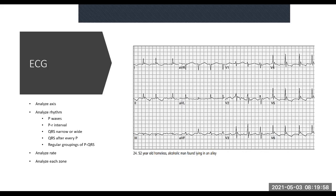Our history today is a 52-year-old homeless alcoholic man found lying in an alley. That's all we have. We just know that he's got a lowered level of consciousness and that he's not okay. In these types of patients, ECG is not going to be your first point of call. You would have put on monitors, taken blood gases, done a whole lot of things to check for what could be happening. And then as part of the workup you would do an ECG to exclude ischemia and things like that.